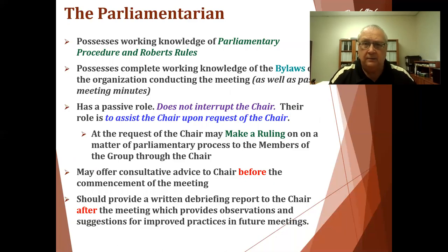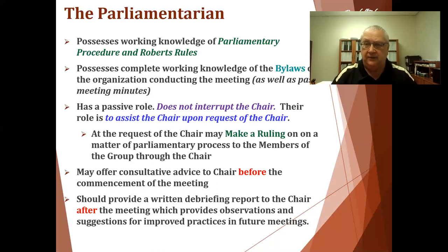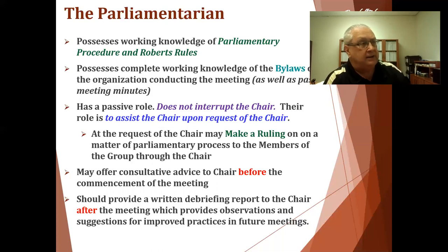There is a role called parliamentarian — it's not a well-understood role. It's for a person who has a working knowledge of Robert's Rules and parliamentary process, and an equal duty to read and have a working knowledge of the bylaws of the organization. They have a passive role and never interrupt the chair. Their role is to assist the chair upon the request of the chair — sometimes the chair gets overwhelmed with the technicality of an issue, and it's nice to say, 'Please hold a minute — I'm going to turn it over to the parliamentarian for advice.'